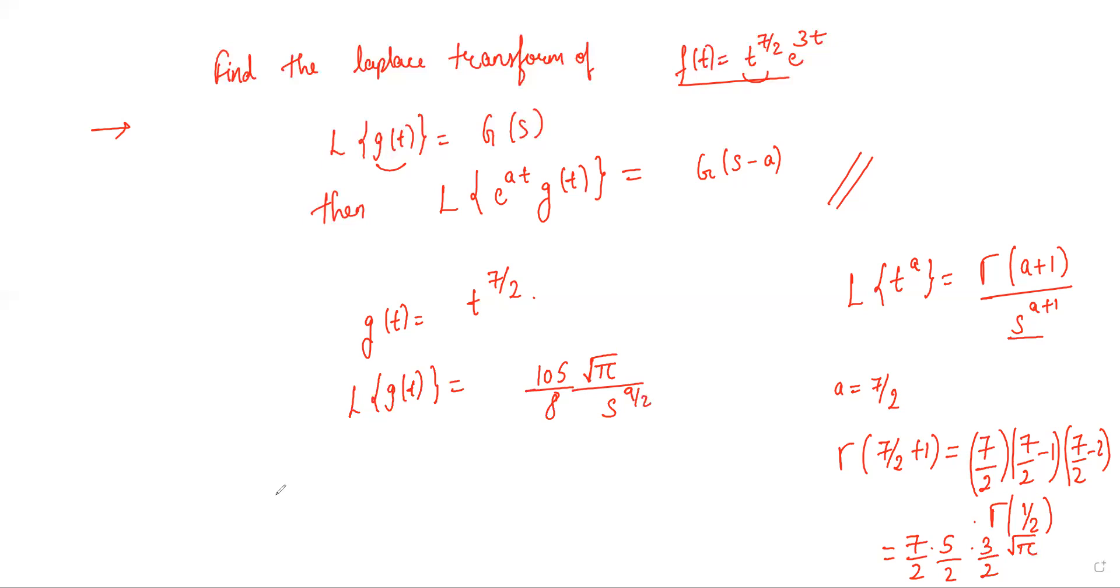Now Laplace transform of our original function f(t) by the first shifting property will be 105 by 8 root pi divided by (s minus 3) to the power 9/2.